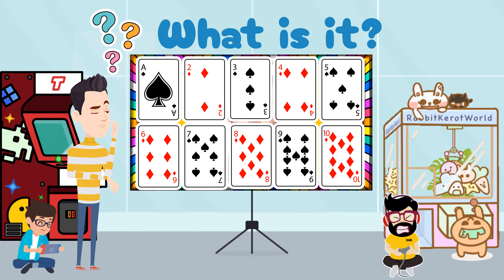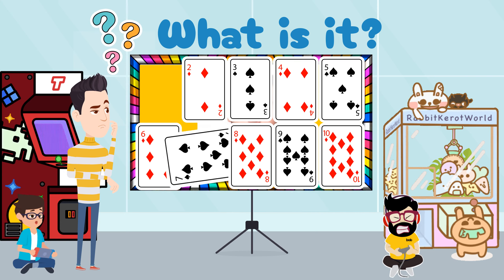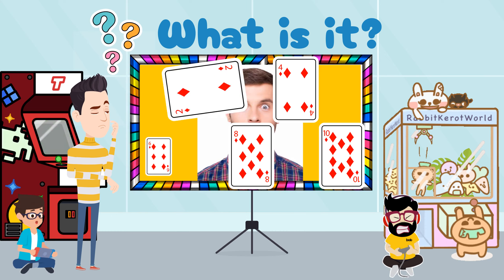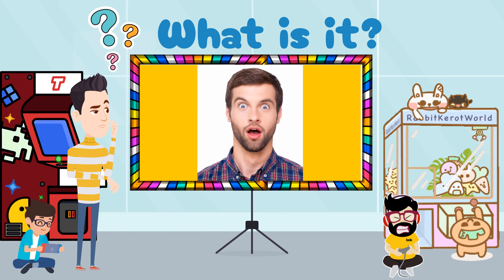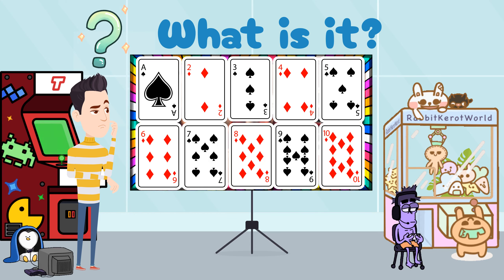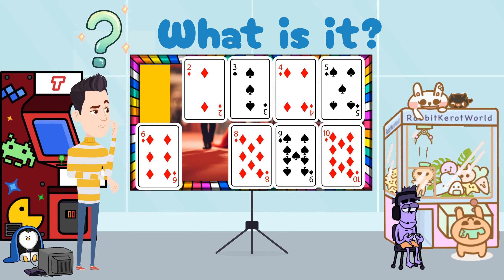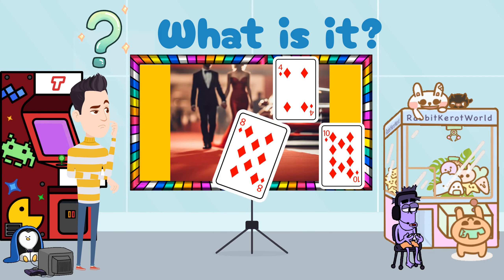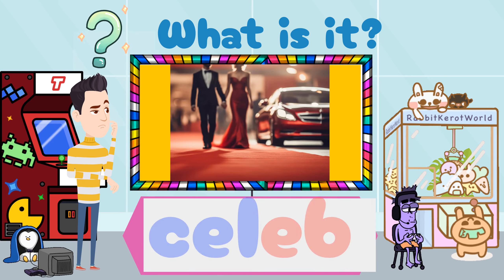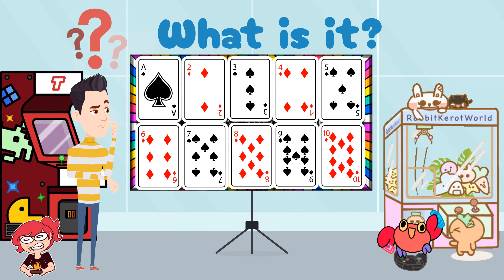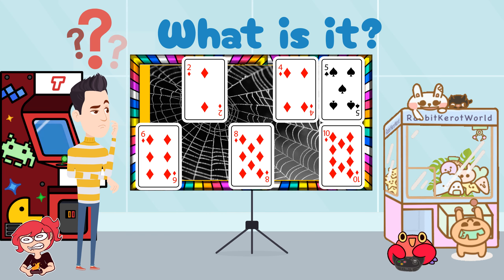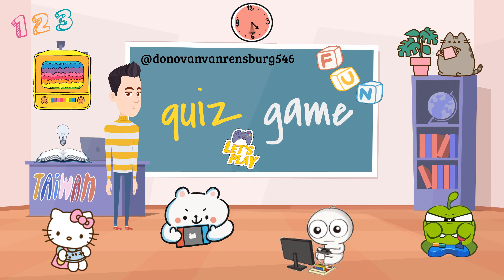Let's play a hidden picture game. Are you ready? Put your hand up and say the word when you have the answer. Let's try one more. Remember to put your hand up. Celeb. Here's the last one. Let's see those hands up. Cobweb.